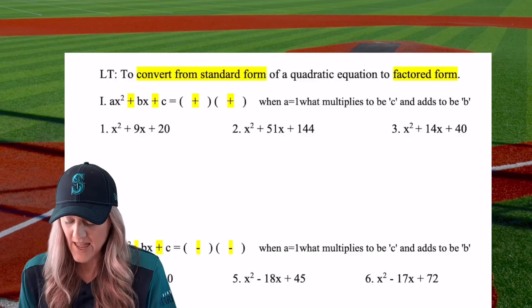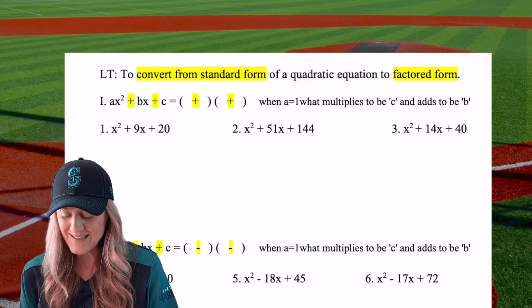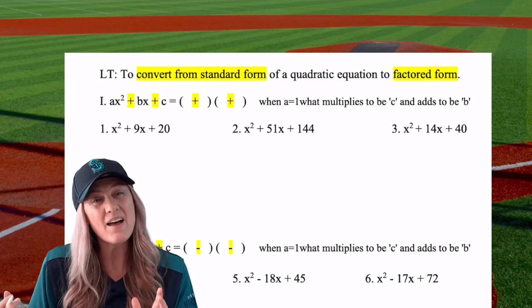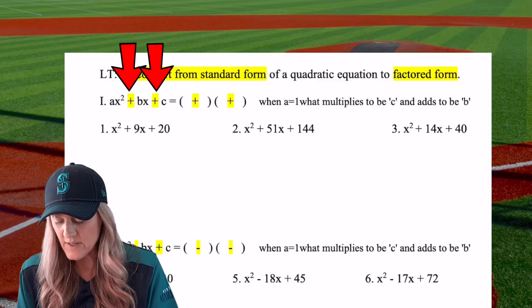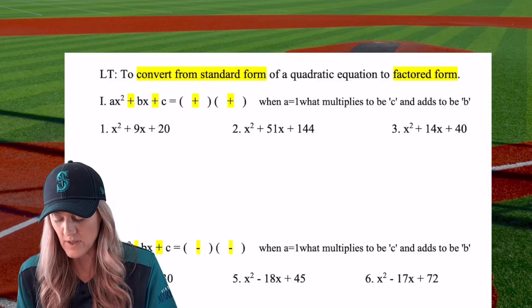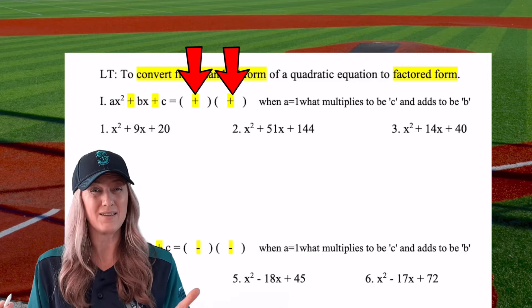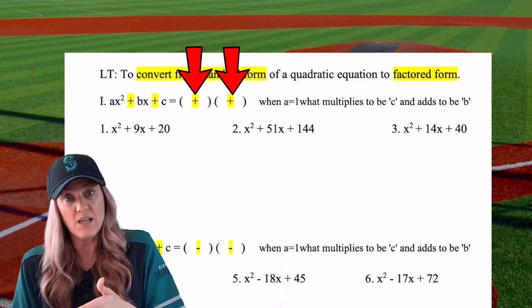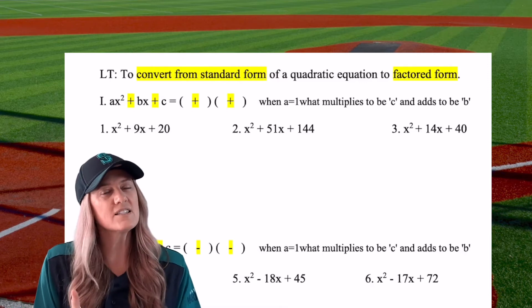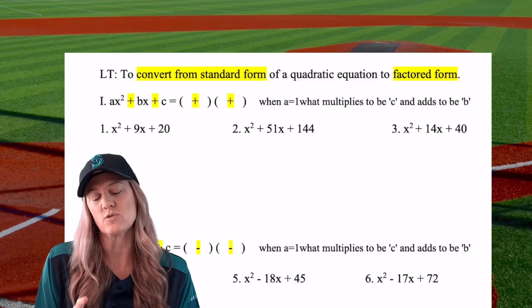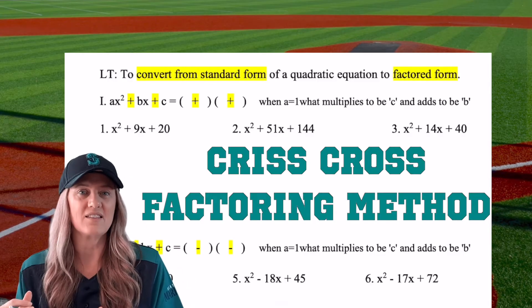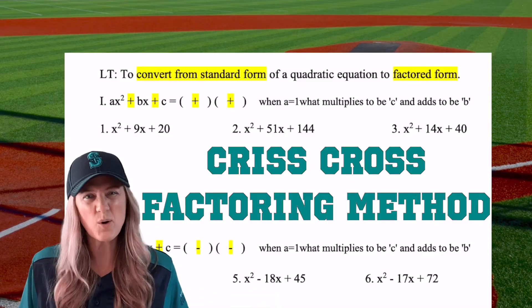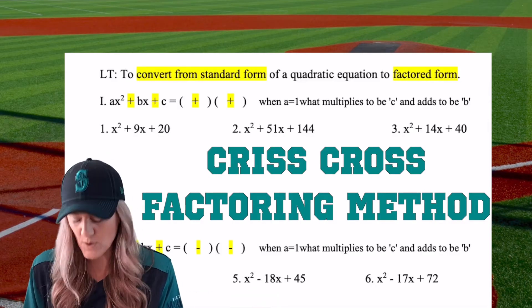So we have ax squared plus bx plus c. I want you to know that if we're ever factoring something that's a plus and a plus in the trinomial, then we are going to factor into two binomials with plus and plus. But then from there, let's talk about the method that we're going to use. We're going to use a crisscross method. It came from a Korean method that I looked up after a student showed me. It's so cool.